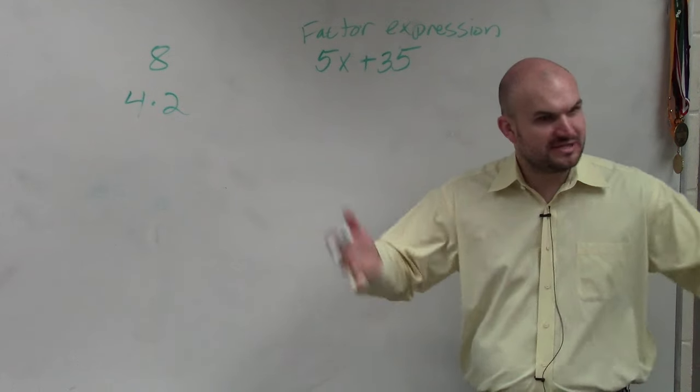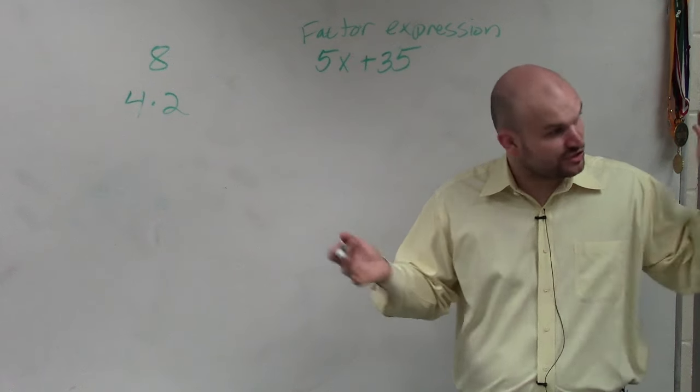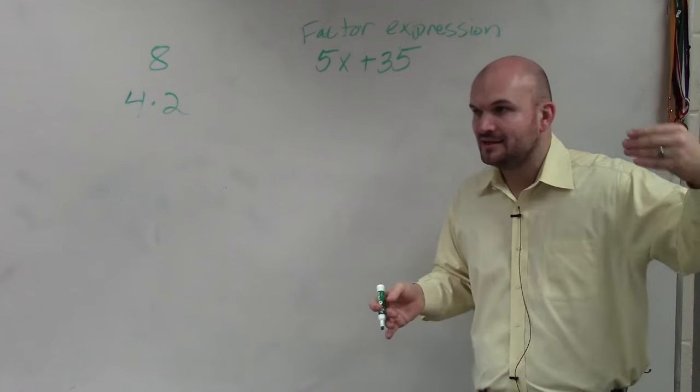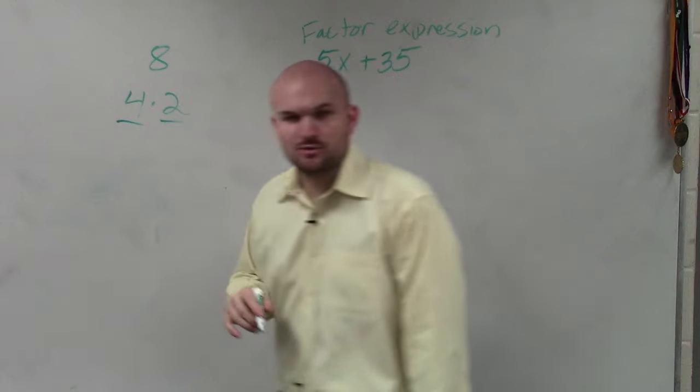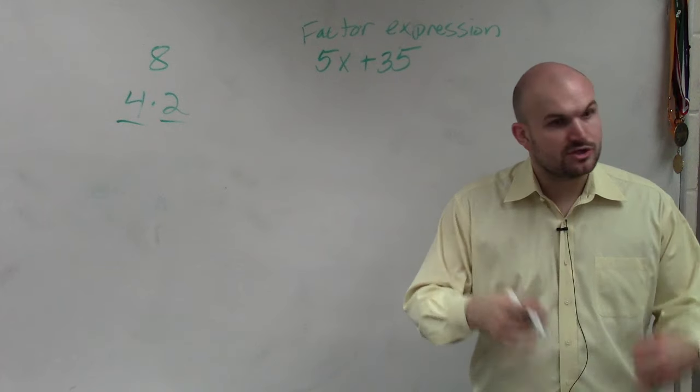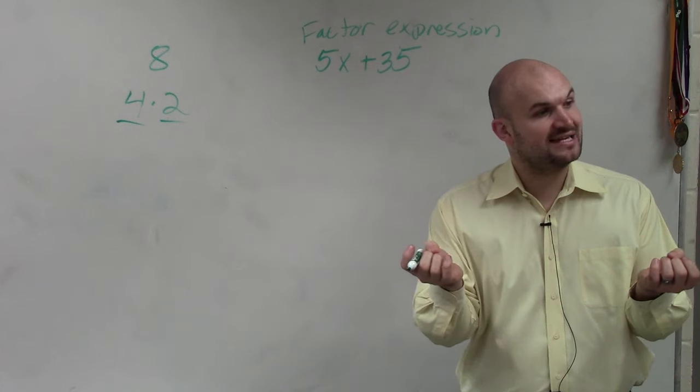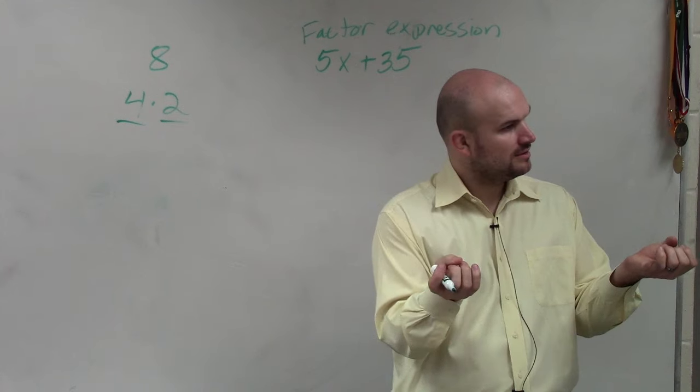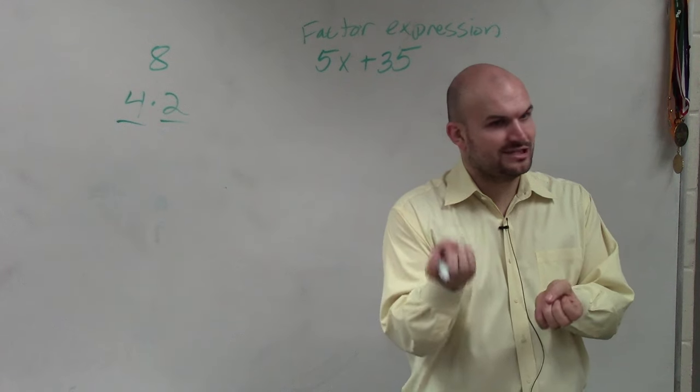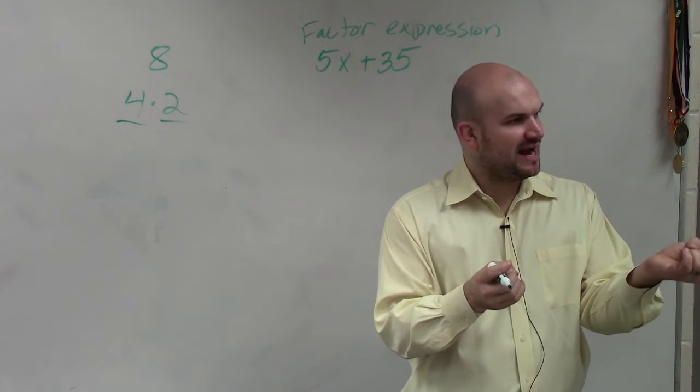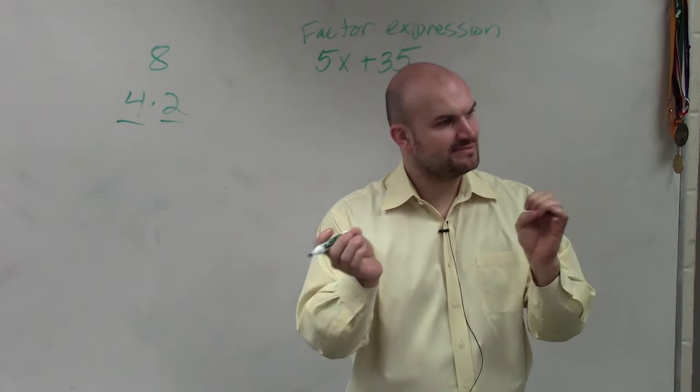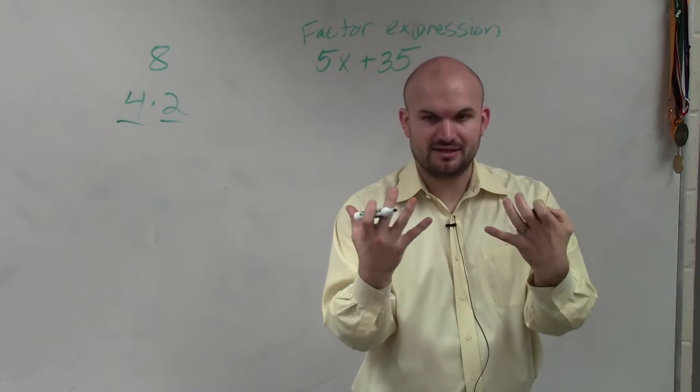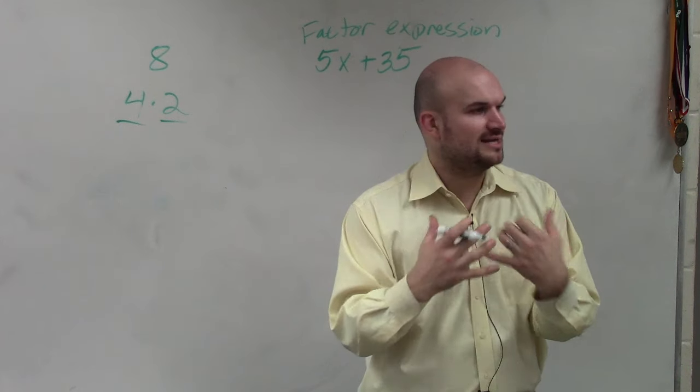Basically, what you do is you take a number that divides into 8, which is 4, divide 8 by 4, and then you multiply what you divided by by what the answer was when you divided it. So you take 8, take a number that divides into 8, which was 4, you divide 8 by 4, you get 2. You take the number that you divided by, which was 4, and multiply it by what the answer was, which was 2. 4 times 2 is 8. Now I've taken the number 8 and I've rewritten it as a product.